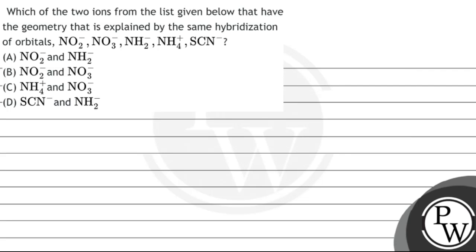Please read this question: which of the two ions from the list given below have a geometry explained by the same hybridization of orbitals? The ions are NO₂⁻, NO₃⁻, NH₂⁻, NH₄⁺, and SCN⁻. Option A: NO₂⁻ and NH₂⁻. Option B: NO₂⁻ and NO₃⁻. Option C: NH₄⁺ and NO₃⁻. Option D: SCN⁻ and NH₂⁻.